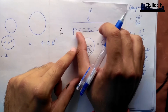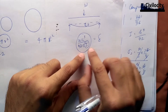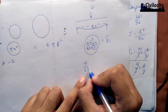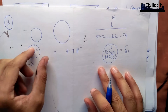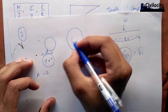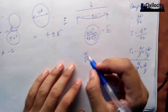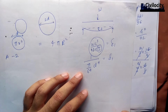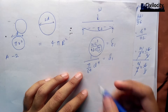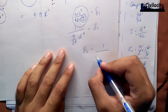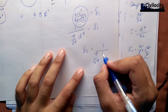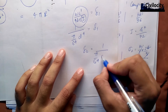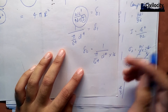Whether it is a cantilever or simply supported beam, deflection is inversely proportional to the moment of inertia I. The moment of inertia for a circular cross-section is I = pi/64 × D to the power of 4. In the first beam, I1 = pi/64 × D⁴. In the second beam, the diameter becomes 2D, so I2 = pi/64 × (2D)⁴ = pi/64 × 16D⁴.